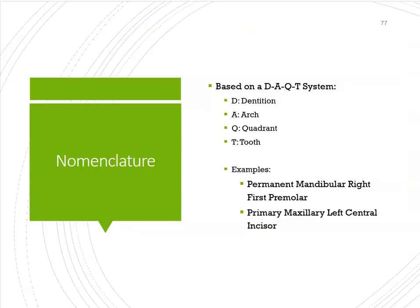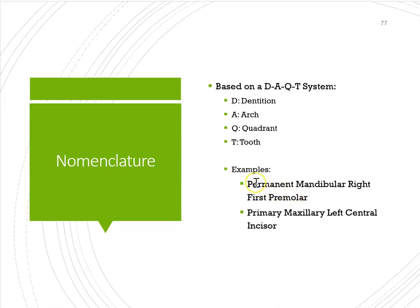Nomenclature is important. When identifying a tooth, follow the DAQT system: D for dentition, A for arc, Q for quadrant, T for tooth. For example — dentition: is it primary or permanent? Here we have permanent. Arc: is it maxillary or mandibular? Here we have mandibular. Quadrant: is it right or left? Here we have right. Tooth: which tooth is it? First premolar. This is a great example of using the DAQT system to identify a tooth.